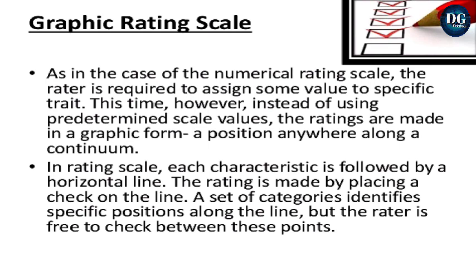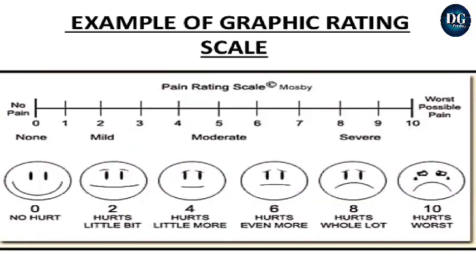The second type is the Graphic Rating Scale. Instead of predetermined scale values, ratings are made by placing a check anywhere along a continuum — a horizontal line. Categories identify specific positions along the line, but the rater is free to check between points. Example: a pain scale from 0 to 10, where 0 = no pain, 2–5 = mild to moderate pain, 8 = severe pain, and 10 = worst possible pain.